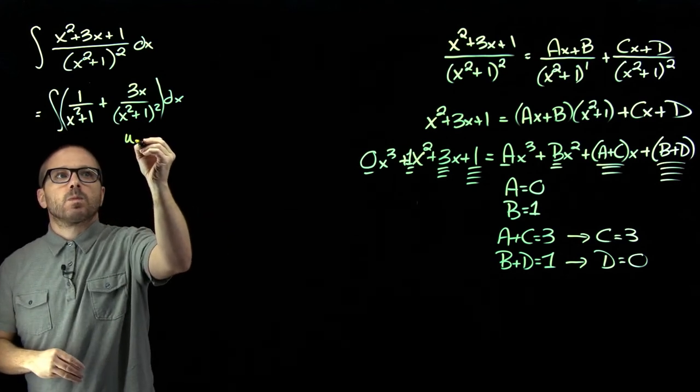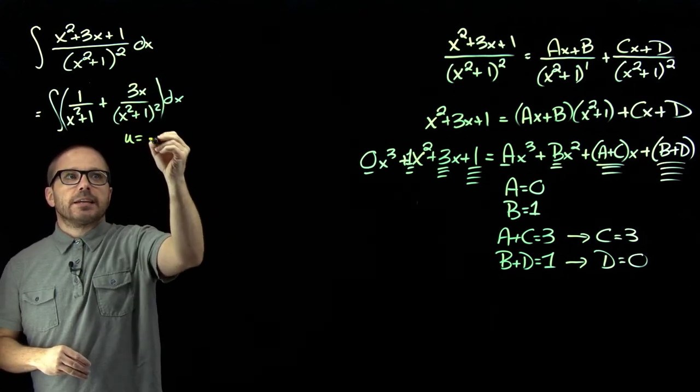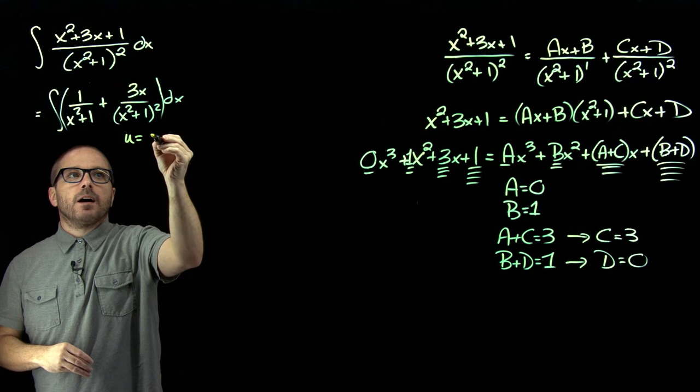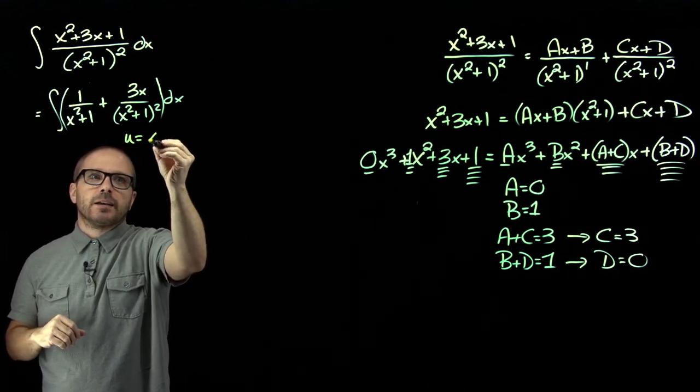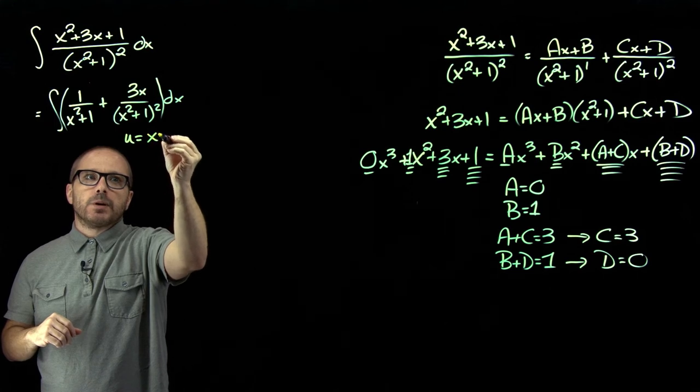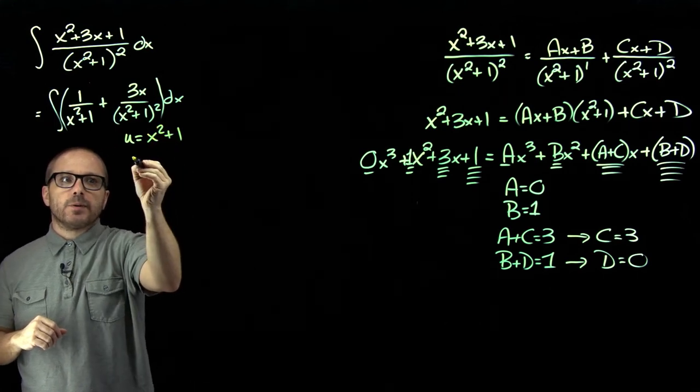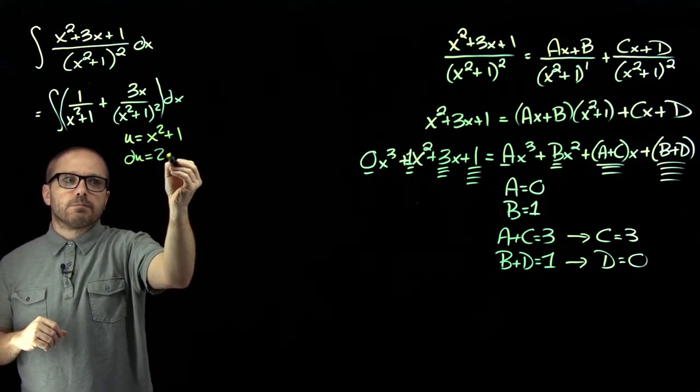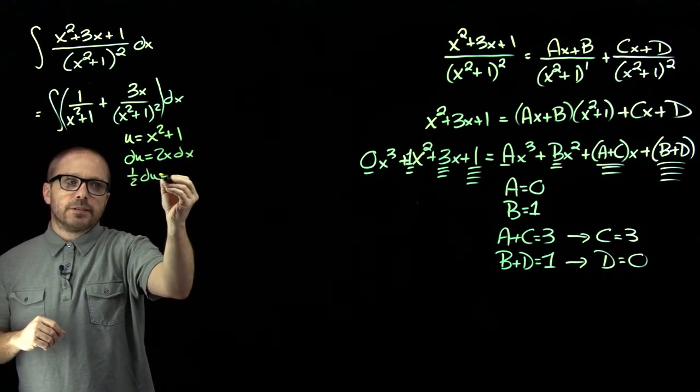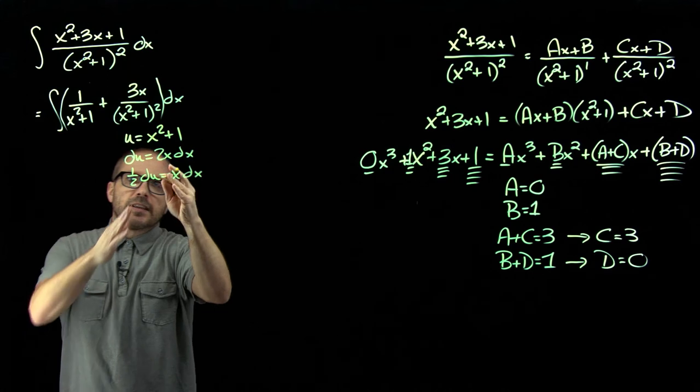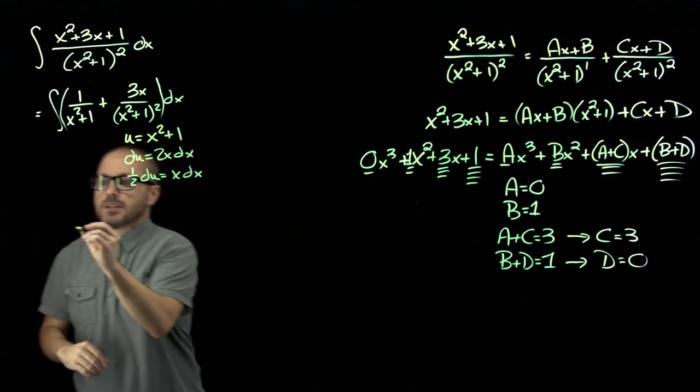So here, just for this second expression, technically I'm sort of breaking this into two integrals, but I want to save some writing. I'm doing a u of x squared plus one. So du is two x dx or one half du is x dx. That's really just for that second expression.